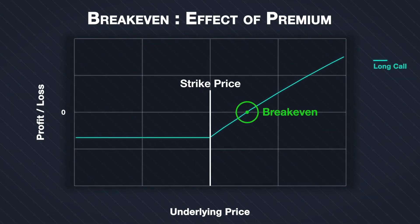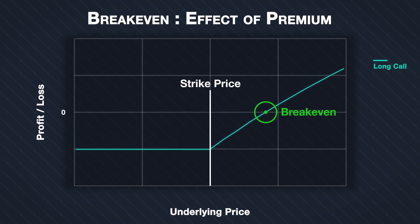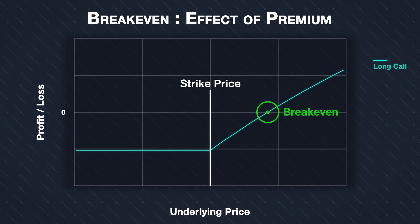The higher the option premium, the further away from the strike price the breakeven price will be. High option premiums favour the option seller, as the price needs to move further before the seller will start making a loss. The option buyer, on the other hand, will benefit from lower option premiums, because the price will then need to move a smaller distance before they start to make a profit.